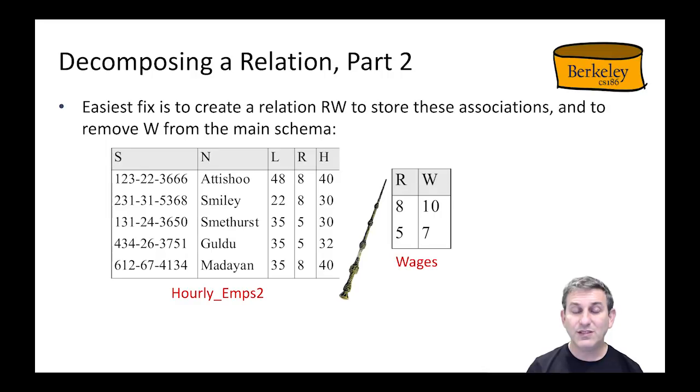We're going to decompose this relation by taking that dependency, R determines W, and creating a table for it, RW. We'll call that the wages table. We're going to remove W from the main schema, W being on the right-hand side of the dependency. So we're left with SNLRH in hourly_emps2, no wages. And a wages table where R determines W is a functional dependency on that table. You can see that R determines W is okay because R here then is a key of the wages table.